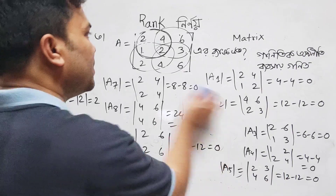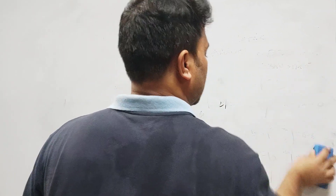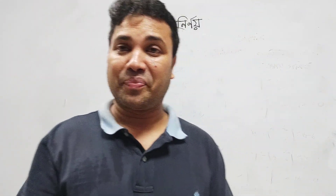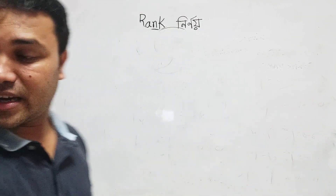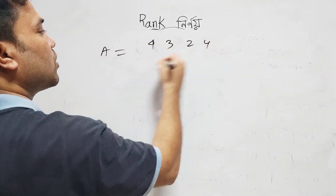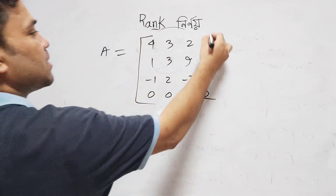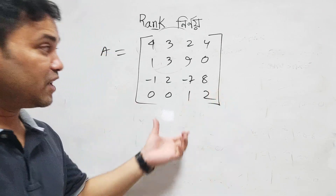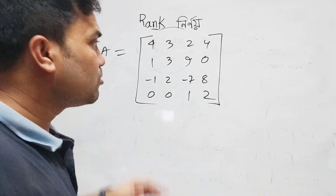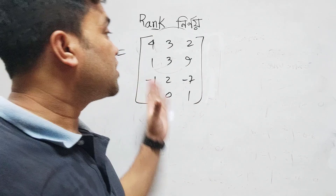Now I will show you how to do this. The whole matrix is equal to: 4, 3, 2, 4 — 1, 3, 9, 0 — 2, 7, 8, 0 — 0, 1, 2. I will say what the column is. I will say that the rank is 4, because the rank is 4. But the number of rows is equal to 2. The column is 4, 3, 3.